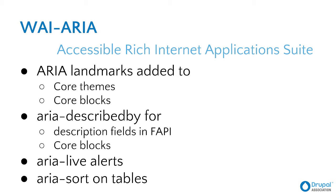We've used ARIA described-by to provide descriptions of fields, so if an input form has a description field, it's semantically linked so a screen reader user can understand what that description field is tied to. ARIA live is something I'll talk about later — it provides a way to interrupt the user and make sure that if there's an urgent issue, what's being read to them can be interrupted. We've also added ARIA sort, which gives the ability to convey when you're changing the sort order of a table, giving that information semantically to the browser or assistive technology.